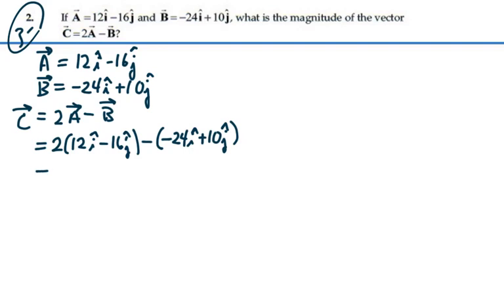We can multiply it through the two, which is just constant. So we have 24i minus 32j. And then a minus minus will give us a plus 24i over here minus 10j. So we're going to have 48i minus 42j.